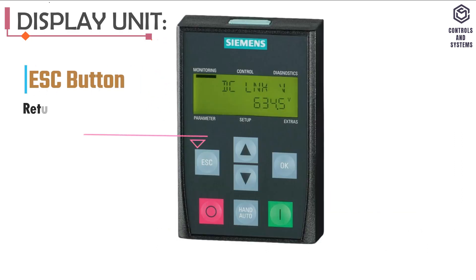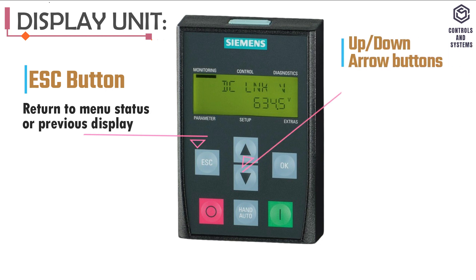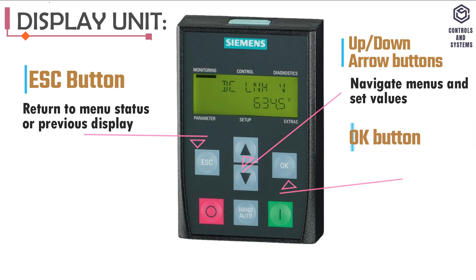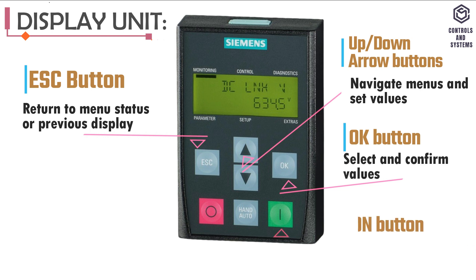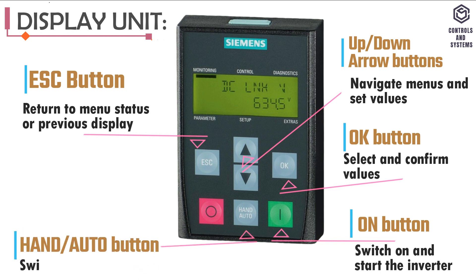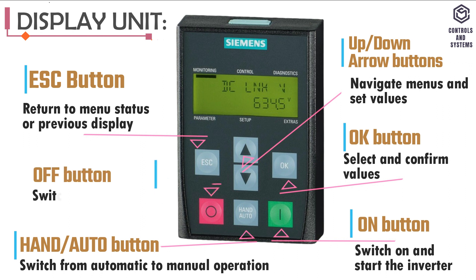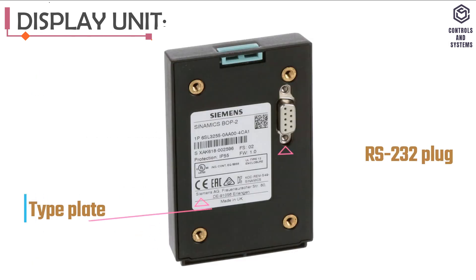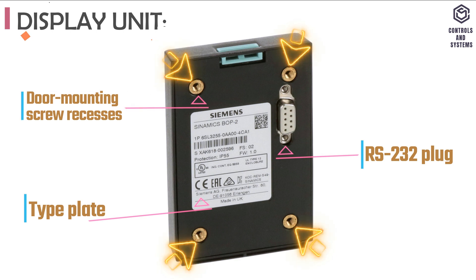Display unit: Escape button — used for return to menu status or previous display; Up/Down arrow buttons — used for navigate menus and set values; OK button — used for select and confirm values; On button — used for switch on and start the inverter; Hand and Auto button — used for switch from automatic to manual operation; Off button — used for switch off the inverter; Type Plate; RS-232 plug; and door mounting screw recesses.